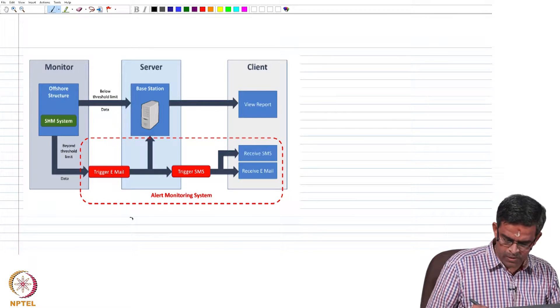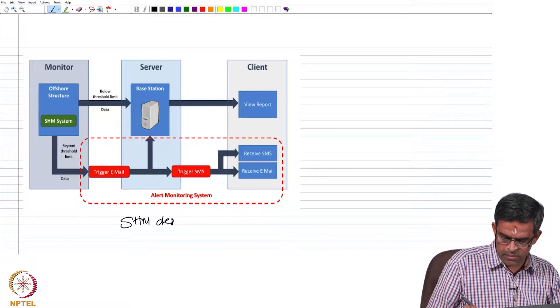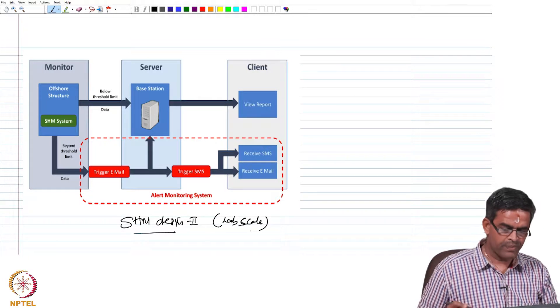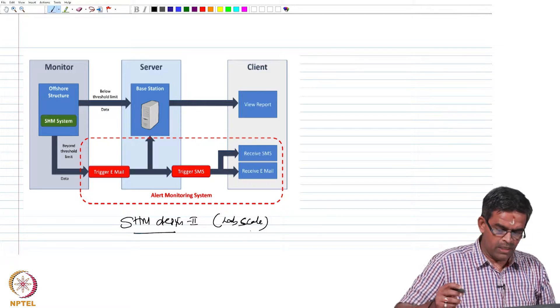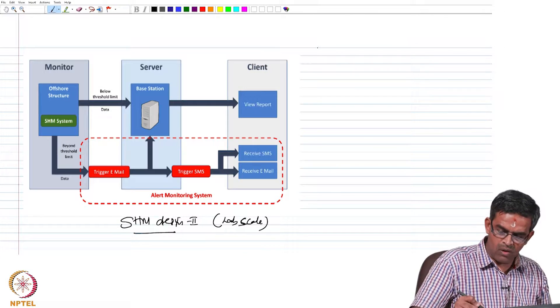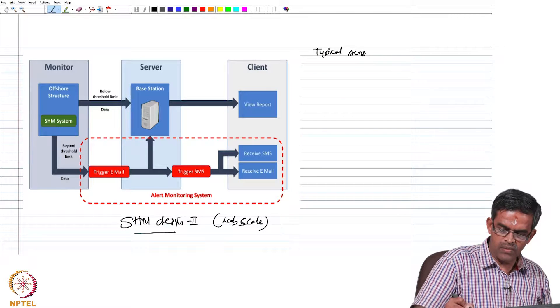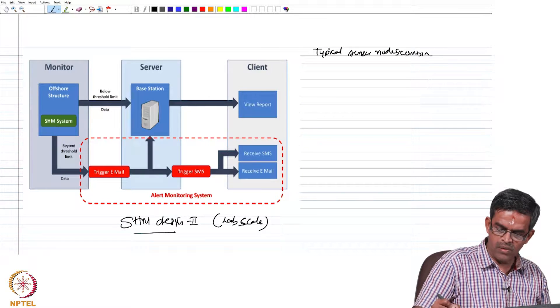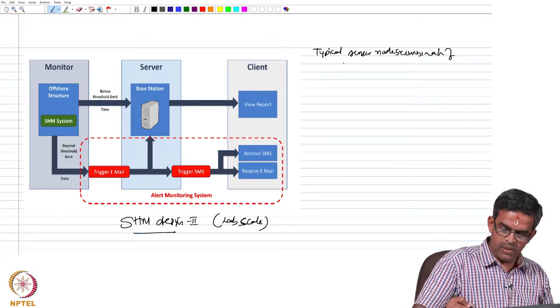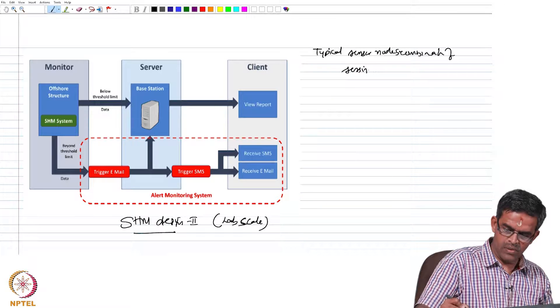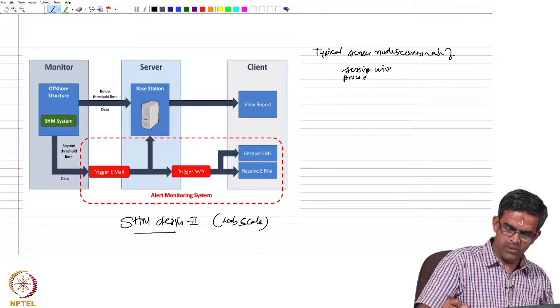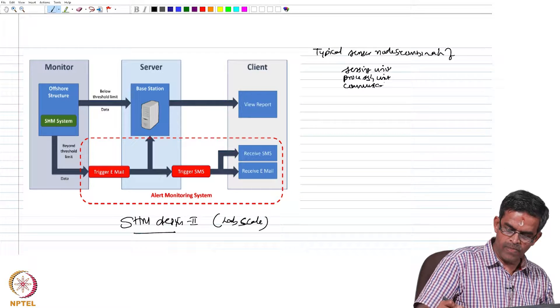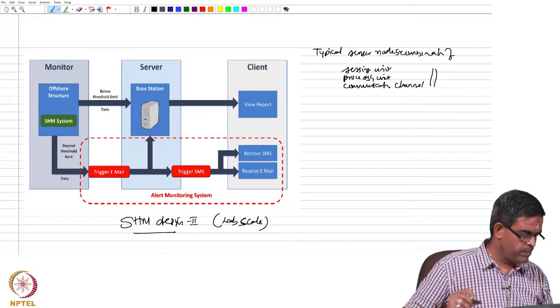If you look at the figure here, this is actually the layout of SHM design 2 which we are discussing for the lab scale. The typical sensor node is a combination of sensing unit, processing unit, and communication channel.